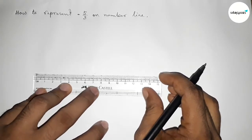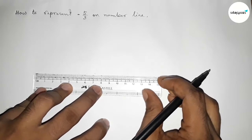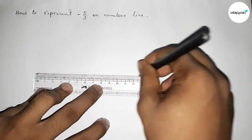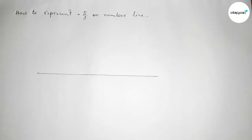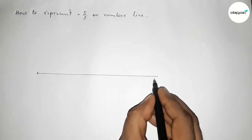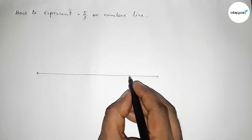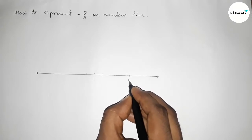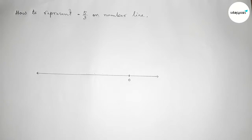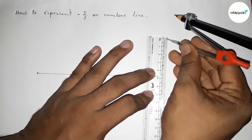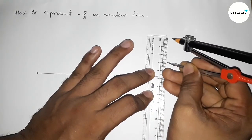First of all, we have to construct a number line. Drawing a line of any length, taking arrow marks on both sides, and marking the number zero. For easy calculation, I'm going to use a scale and take a length using a compass — here I'm going to take three centimeters.